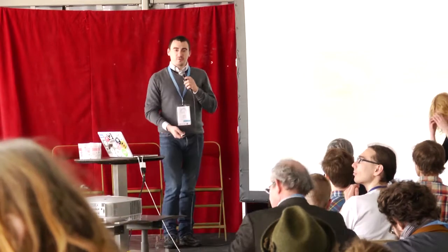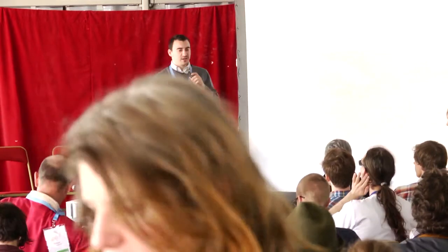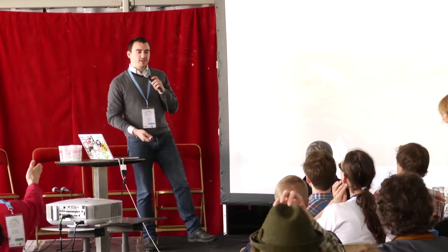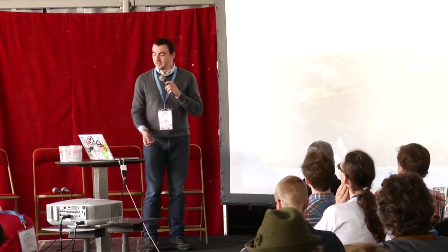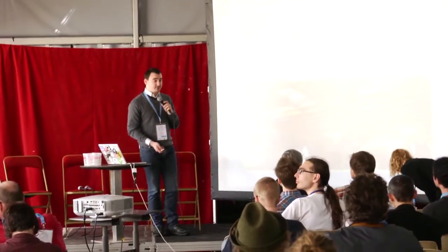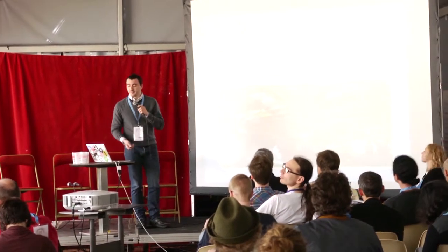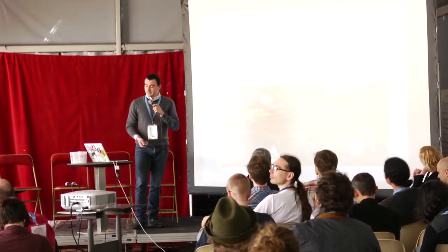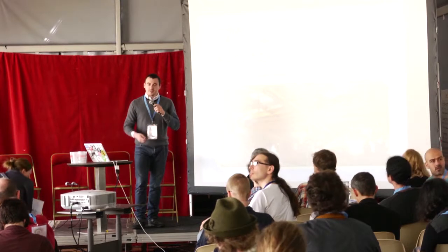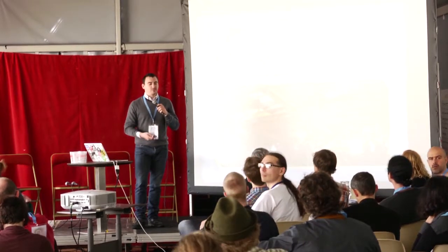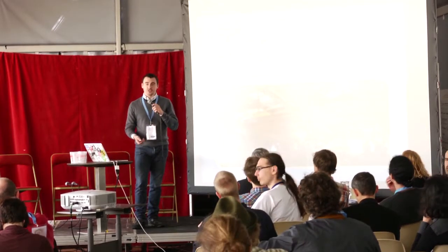The aim of Open Source Ecology is to develop an open source modular version of 50 industrial machines that one can build. It's based on the fact that technology for farming is really expensive.